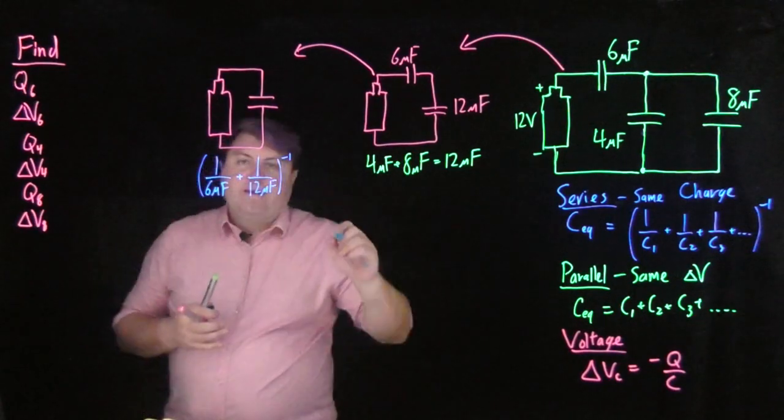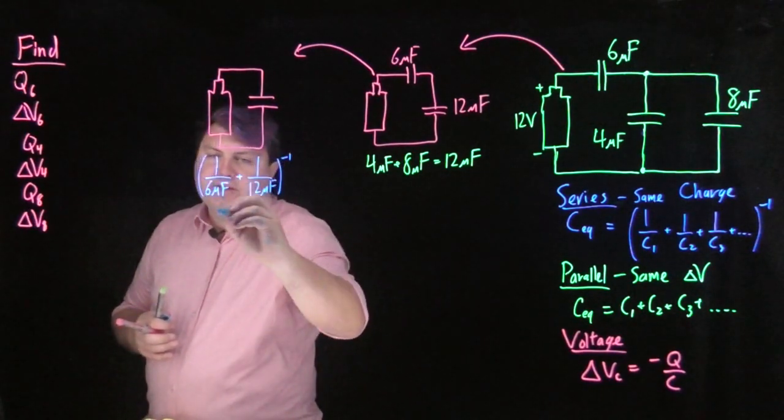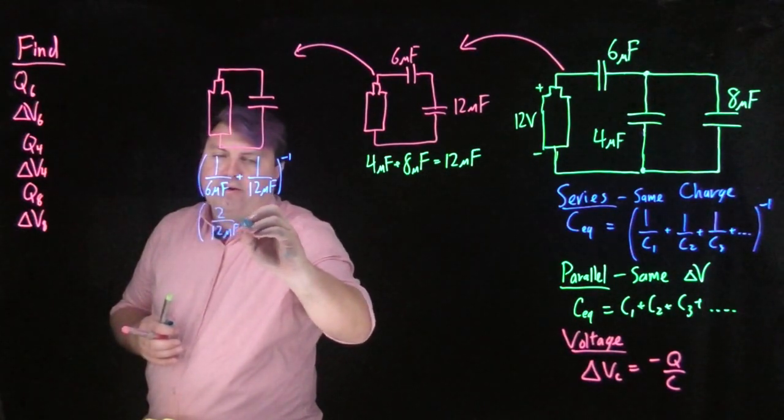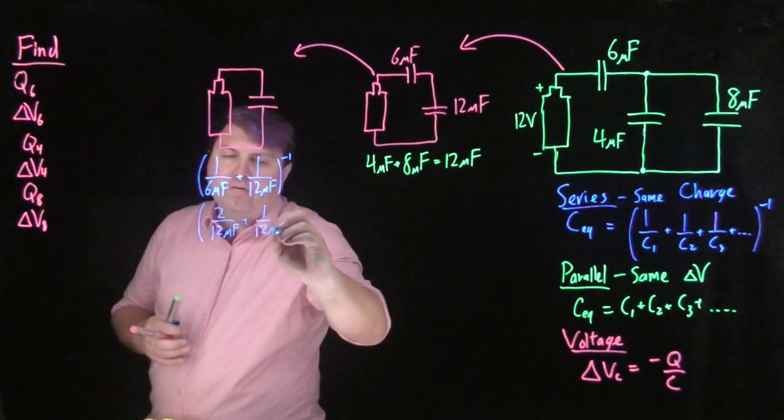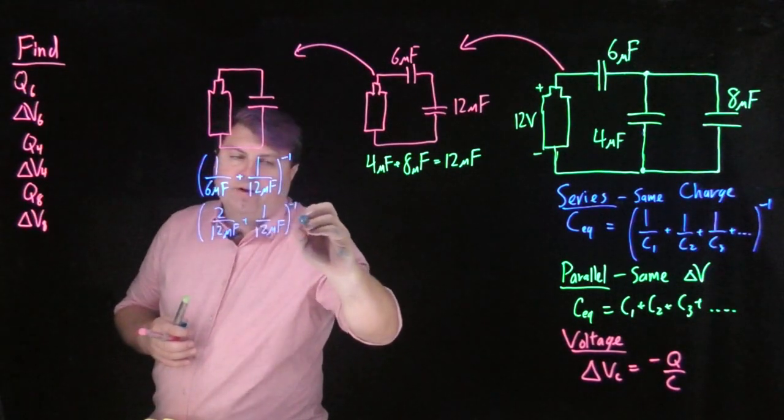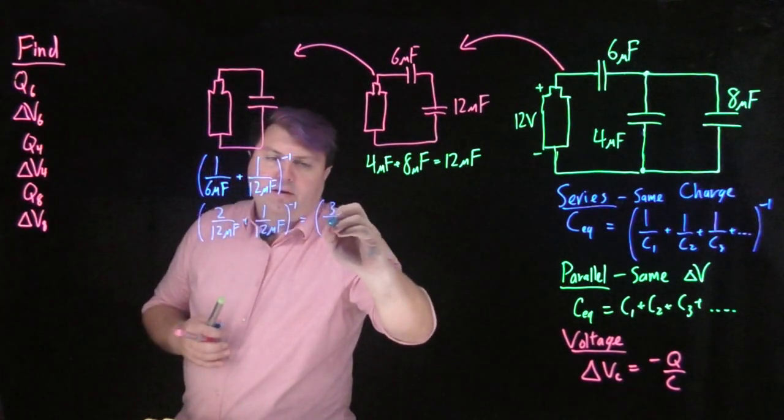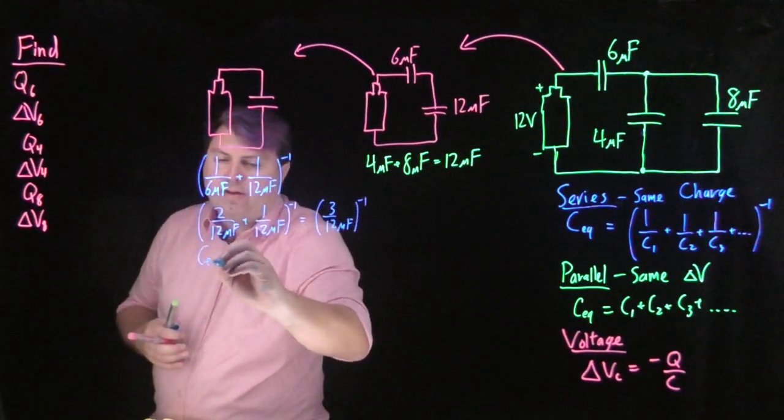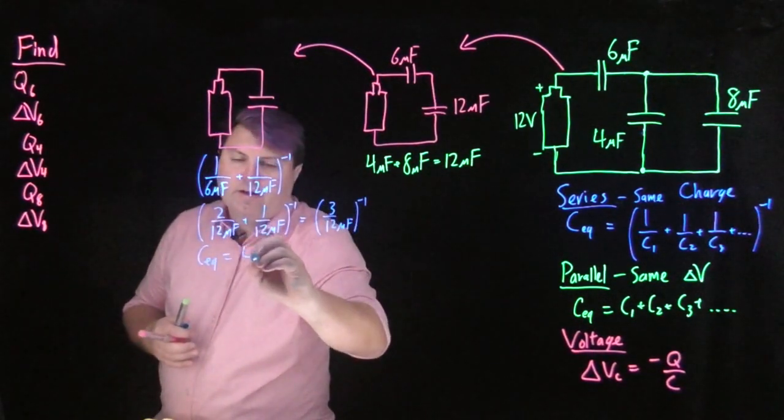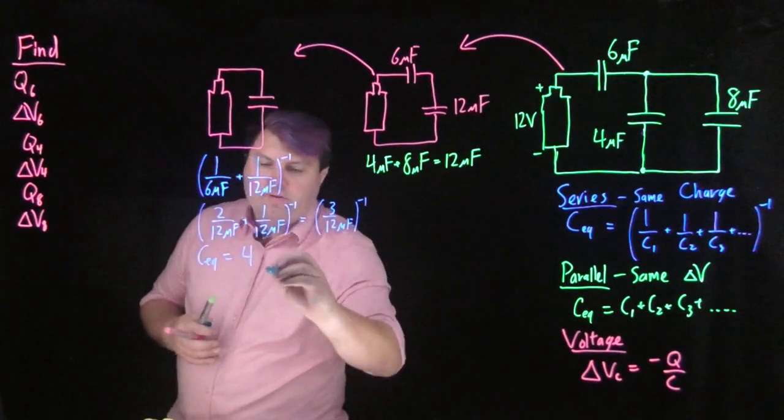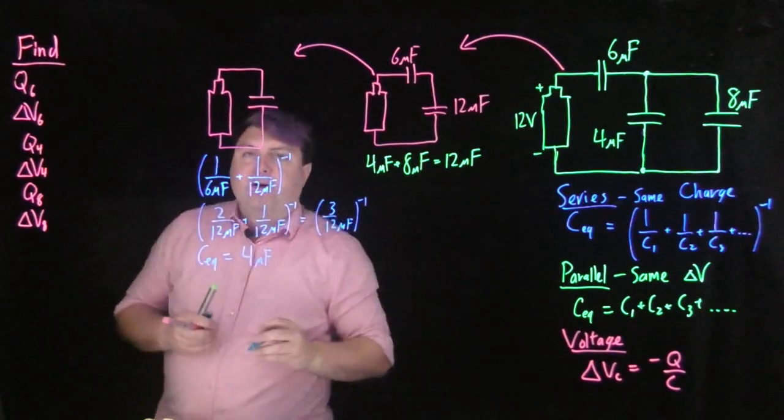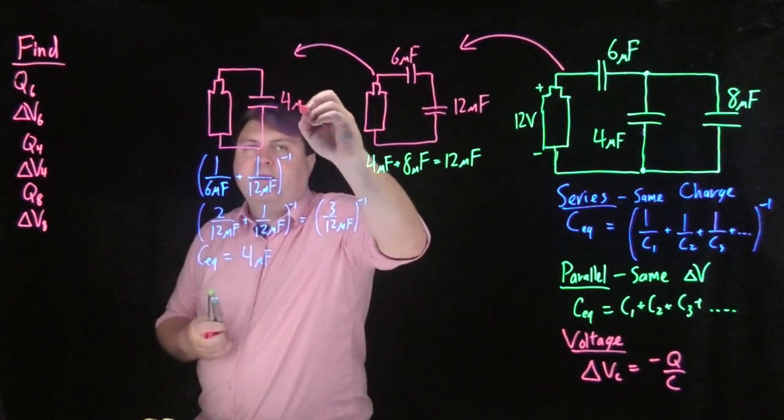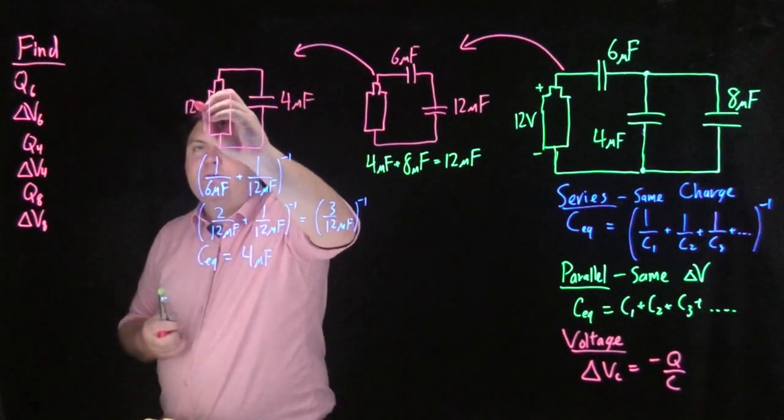I can, instead of writing 1/6, write 2/12, so I have 2 over 12 microfarads plus 1 over 12 microfarads all to the minus 1. That gets me 3 over 12 microfarads to the negative 1, or the equivalent capacitance is 12 divided by 3, which is 4 microfarads. So I can rewrite this as 4 microfarads with a 12 volt battery.